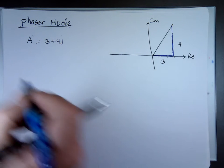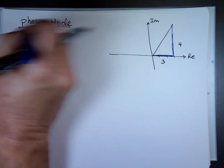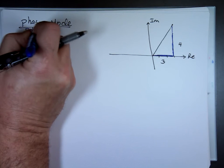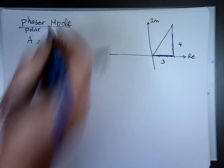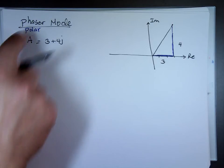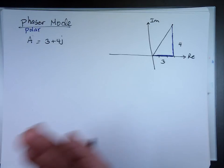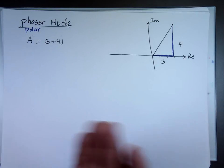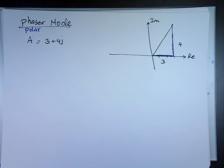Sometimes instead of phasor, we use polar — they're the same thing. Our book, when we deal with sine and cosine, calls it phasor. In math, they don't deal with sine and cosine, so they just call it polar coordinates. So to change it to polar, I need to know the length of this vector and what the angle is.